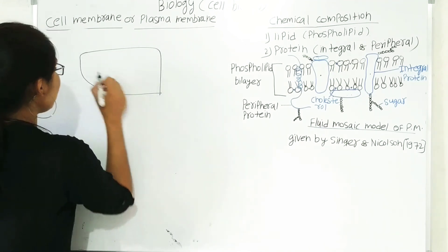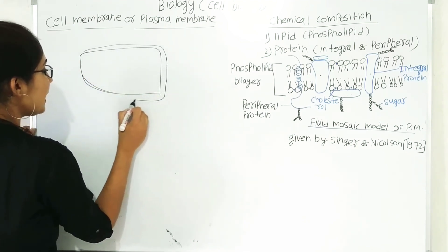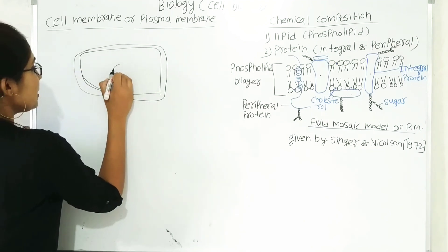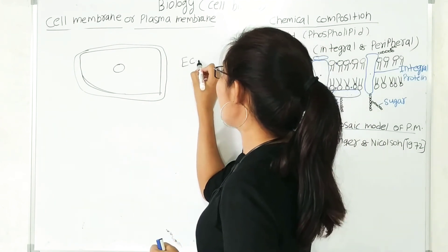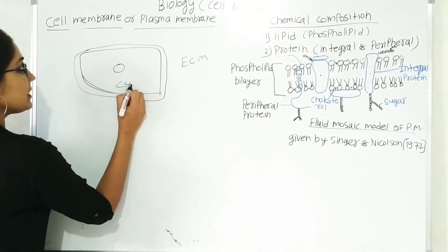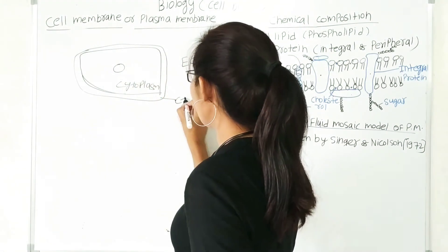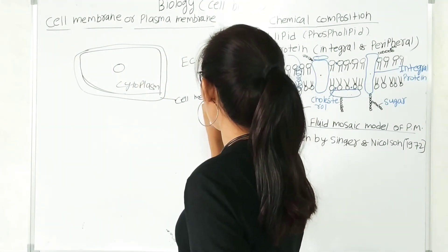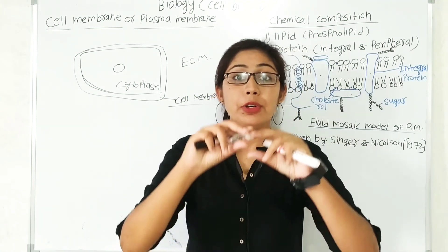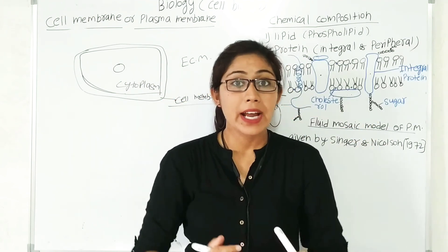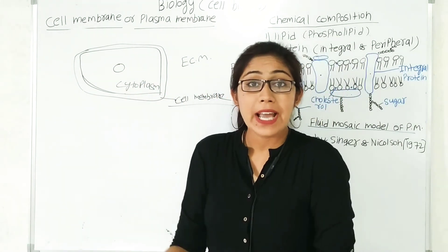Let's suppose this is the structure of a cell with a double membrane — this is the plasma membrane. This is the structure of the nucleus. This portion here is the extracellular matrix compartment, and this is the cytoplasm portion. This is the structure of the cell membrane. So you can say: what is the cell membrane?